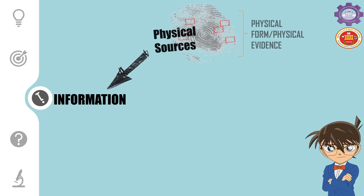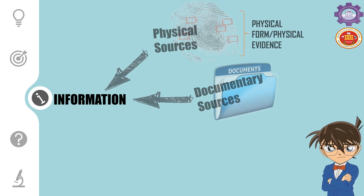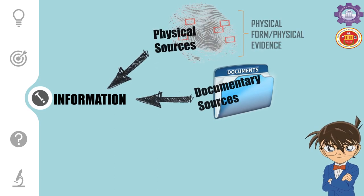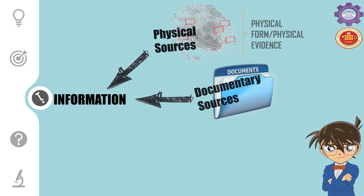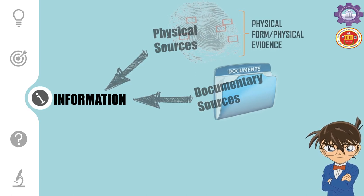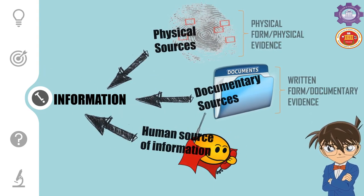The second source of information is documentary sources. These are any type of information of a printed nature or data otherwise recovered and stored for retrieval. Such information may be obtained within the police agency, from other criminal justice agencies, or even from sources not connected with law enforcement — for example, public records, school records, employment records, and the like. The type of information obtained from these sources may be considered as written form, and the type of evidence developed may be called documentary evidence.